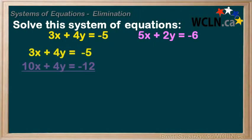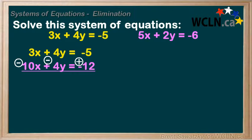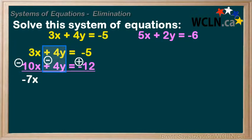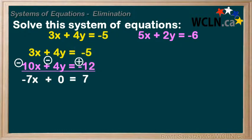The second equation multiplied by 2 gives us 10x plus 4y equals negative 12. Then we line up the equations in columns and subtract the second one. To subtract, we change the signs of all of the terms in the second equation, which allows us to eliminate the 4y's. We circle the changed signs to keep track. In the first column, 3x minus 10x equals negative 7x. In the second column, negative 4y plus 4y equals 0 — they're eliminated. In the last column, negative 5 plus 12 equals 7.